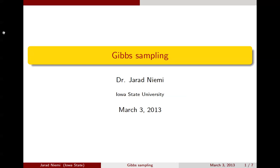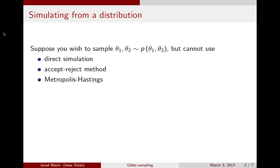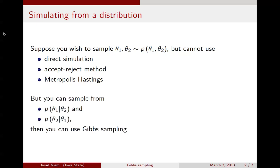Hello, this is Jared Nehemi with a mini-lecture on Gibbs sampling. Previously we've talked about trying to sample from univariate distributions. Most of the methods that we talked about could be generalized to multivariate distributions. Today we're going to make explicit trying to draw from a bivariate distribution for theta1 and theta2, in situations where it's not practical to do direct simulation from this joint distribution, or using accept-reject, or Metropolis-Hastings. We're going to consider a situation where we can sample from the conditional distributions for theta1 given theta2, and for theta2 given theta1. If you can sample from these two distributions, then you can use something called Gibbs sampling.